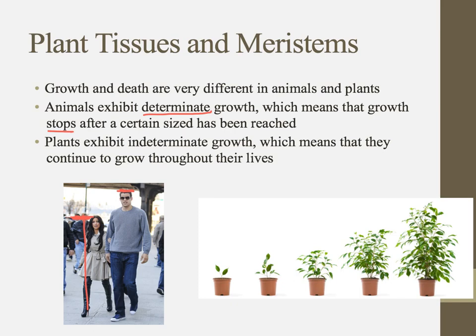Plants, on the other hand, have what is called indeterminate growth — they continue to grow throughout their lifetime. Can we artificially make a plant stop growing? Yes, we can do that, but left to their own devices, plants are going to continue to grow throughout their lives. And that doesn't necessarily mean a dramatic increase in height — it could also mean an increase in diameter. Growth can mean a lot of different things.